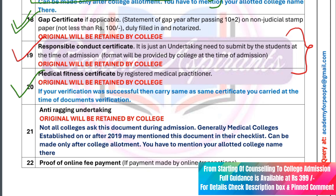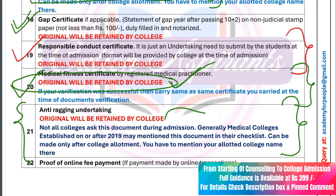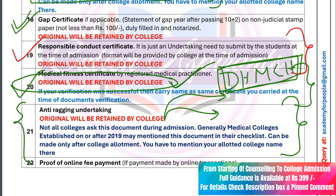This is the Medical Fitness Certificate. The Medical Fitness Certificate is not in your document certification, but it is required for your original college. This is the Anti-Ragging Undertaking. Anti-Ragging Declarations are of two types in college — some colleges can fill the format with a non-judicial stamp. Some colleges can fill it with a form.